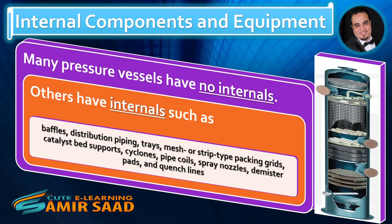Many pressure vessels have no internals. Others have internals such as baffles, distribution piping, trays, mesh or strip-type packing grids, catalyst bed supports, cyclones, pipe coils, spray nozzles, demister pads, and quench lines.